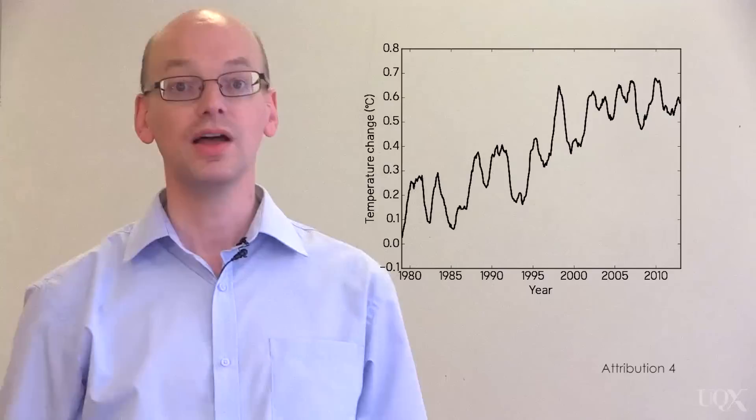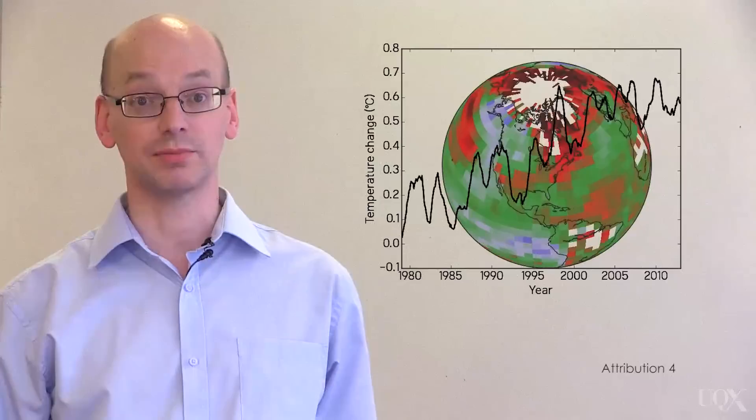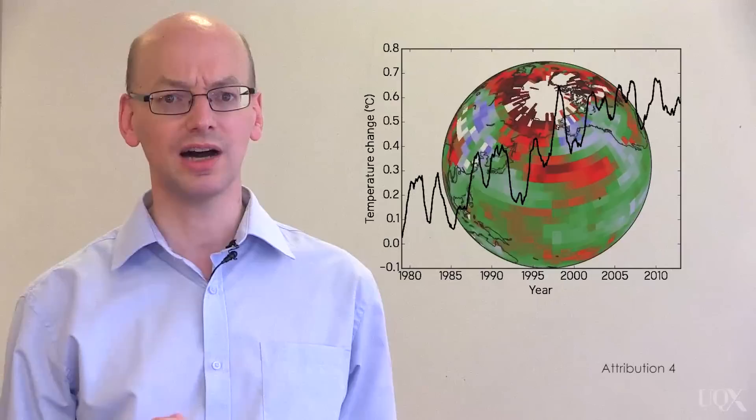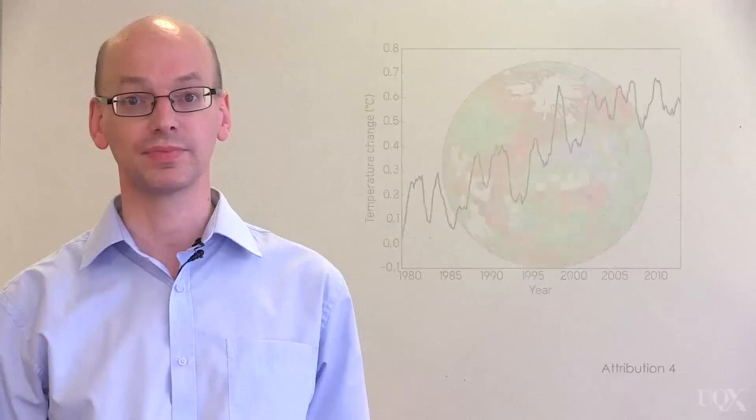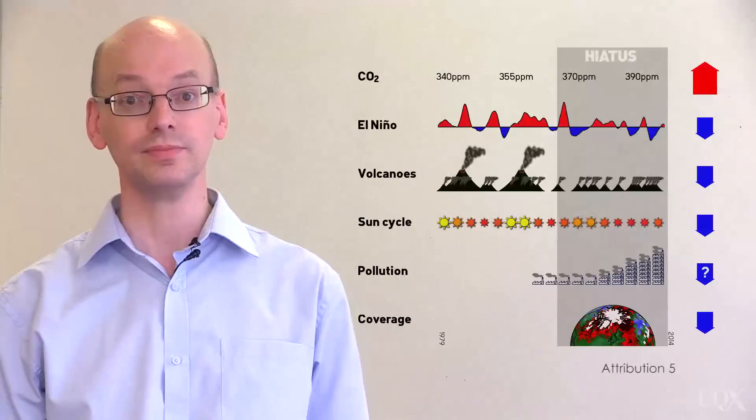The final factor is in the observations themselves. Two of the major temperature data providers, the UK Met Office and NOAA, don't include the Arctic in their global temperature calculation because there are no weather stations there. But the Arctic has been warming faster than anywhere else on the planet. Missing it out leads to an underestimation of the rate of warming.